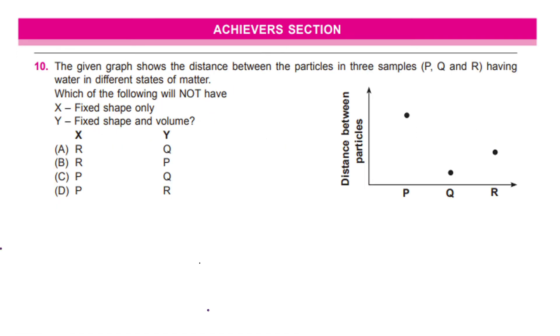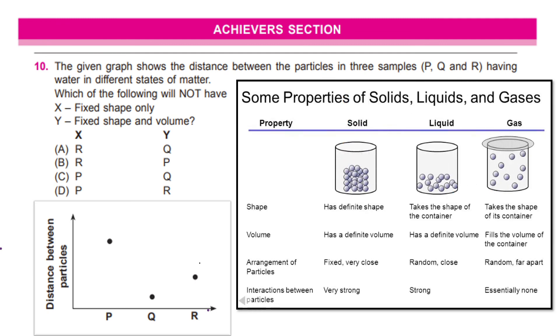Let us see another question in the achiever section, which is our last question of this paper. It says, the given graph shows the distance between particles in three samples, P, Q and R having water in different states of matter. So, we need to find which of the following will not have fixed shape and which of them will not have fixed shape and volume. Now, let me bring this graph here because I want you to look at this table I have prepared for you to understand the property of solid, liquid and gases.